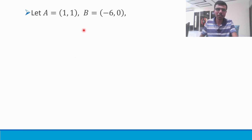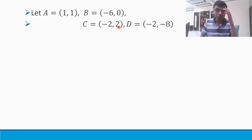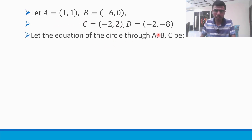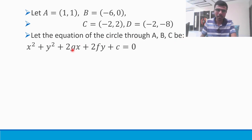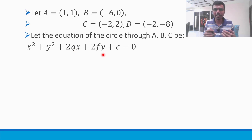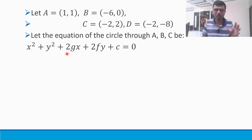I'm going to take the first four points: A is (1, 1), B is (-6, 0), C is (-2, 2). Let the equation of the circle through A, B and C be the standard form: x² + y² + 2gx + 2fy + c = 0. I need to find out the three unknowns: G, F and C.